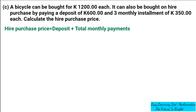So what is the deposit? We are told the deposit is 600 kwacha, so we're going to write 600 kwacha, then plus the total amount of monthly payments. We are told it should be paid for 3 months, so we're going to say plus open bracket 3, then how much is supposed to be paid every month — it's 350 — so times 350 kwacha.